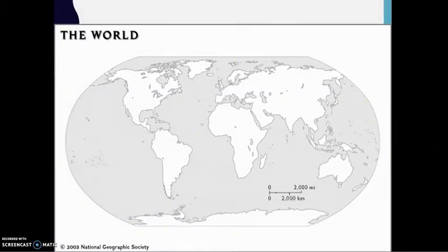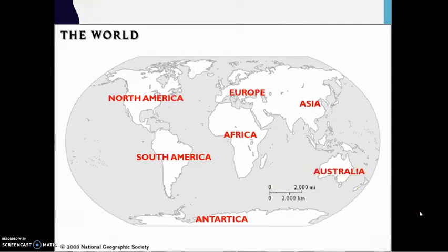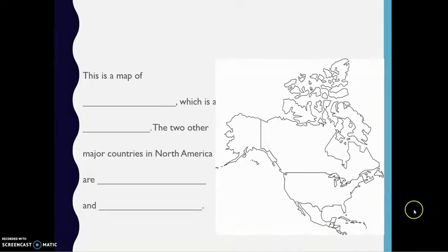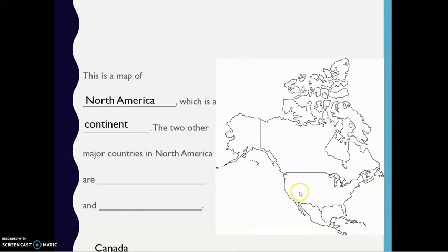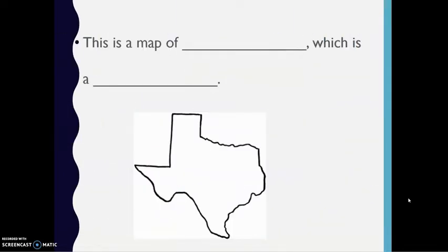Here's a map of the world — North America, South America, Africa, Asia, Europe, Antarctica, Australia. This is a map of North America, which is a continent. The two other major countries in North America besides America would be Canada and Mexico. This is a map of the United States, which is a country.